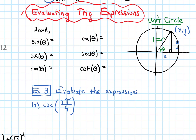Sine of theta, thinking back to SOH-CAH-TOA, sine is the opposite side, which is y, divided by the hypotenuse, which is one. So sine is y over one, which is just y. Cosine, using SOH-CAH-TOA, is adjacent, which is x, over the hypotenuse, which is one. So cosine is x over one, which is x. And tangent is y over x.